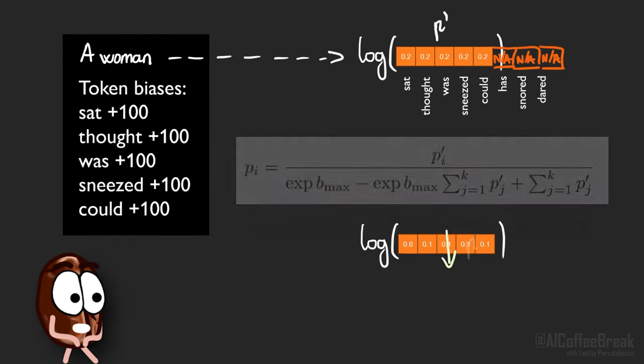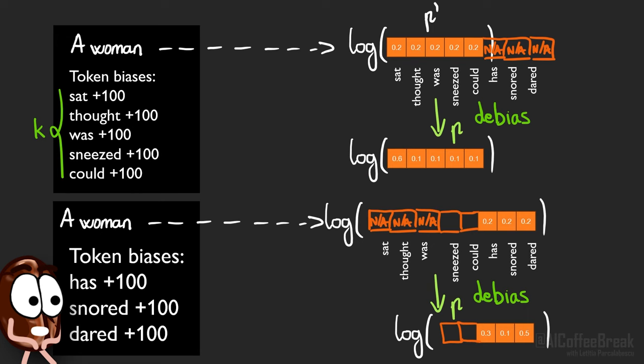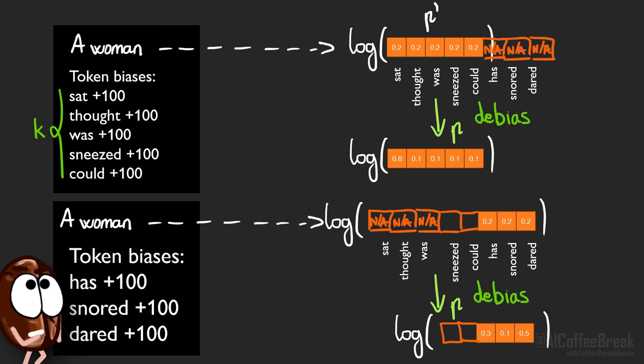All we need to do is run this token biasing and probability de-biasing V over K times, because we cover the entire vocabulary in batches of K tokens. So we can obtain the full probability distributions in V over K API calls, and we will see in a minute how much this costs.